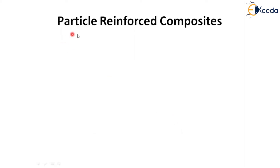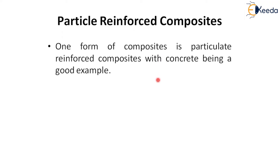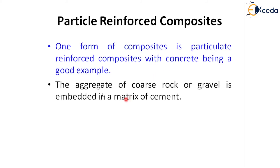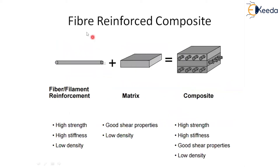The best example of a laminar composite is plywood. For particulate reinforced composite material, particles act as reinforcement. A good example is concrete, where aggregate — coarse rock or gravel — is embedded in a matrix of cement. The aggregate provides stiffness and strength while cement acts as a binder between the reinforcement and the matrix.